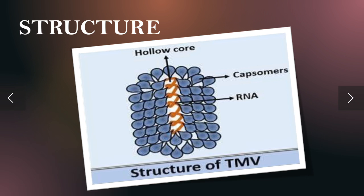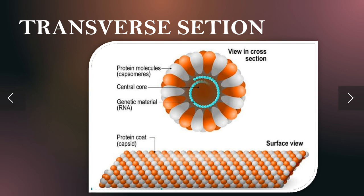Structure of TMV: capsomeres are present, and in this type only RNA will be present along with a hollow core. Viewed in cross section, protein molecules are on the outside, central core in the middle, and the genetic material — RNA — is present inside.